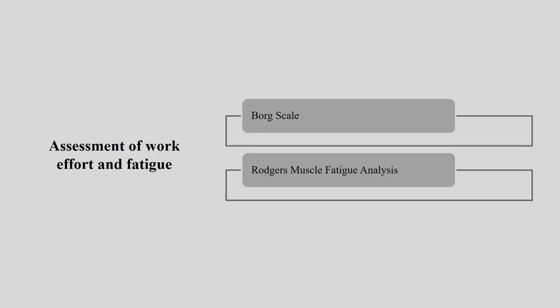First, we will be learning about the Borg scale — it is a subjective method. We have two types of Borg scale and we will be learning both, along with muscle fatigue analysis or muscle fatigue assessment. MFA is a combination of subjective and objective rating and it gives you an understanding or indexing which says whether this work is suitable for so many hours or not, and how our muscles are getting fatigued during physical activity.